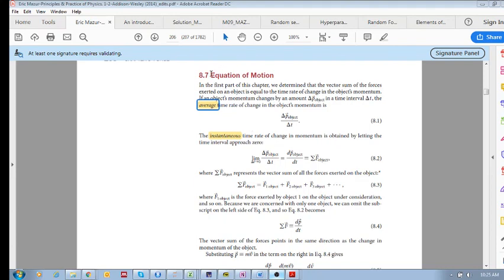Okay, so in section 8.7 we're going to look at something called the equation of motion. Earlier on we saw that the vector sum of forces exerted on an object, a bunch of forces being applied to an object, the vector sum if we add all of those force vectors up, we get a resultant.